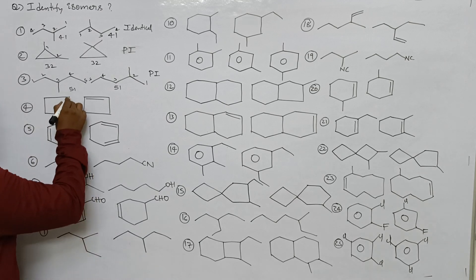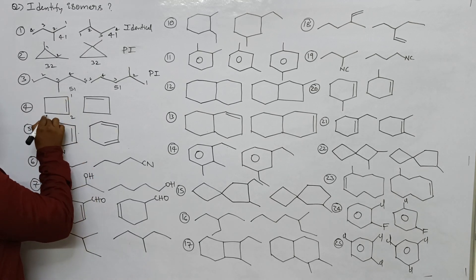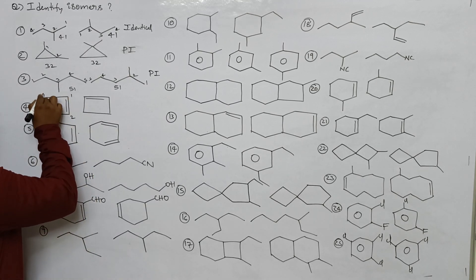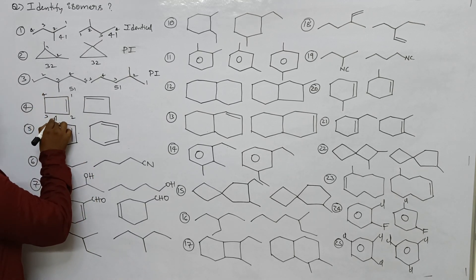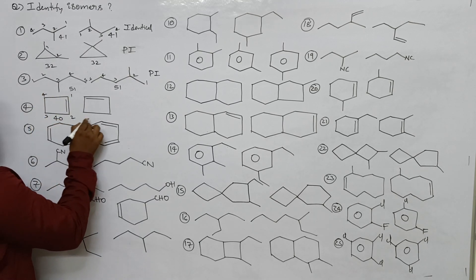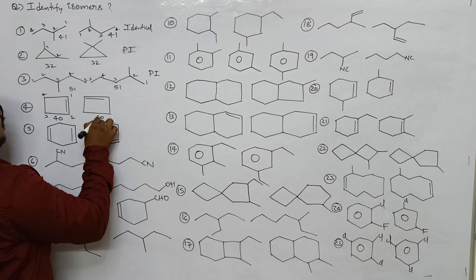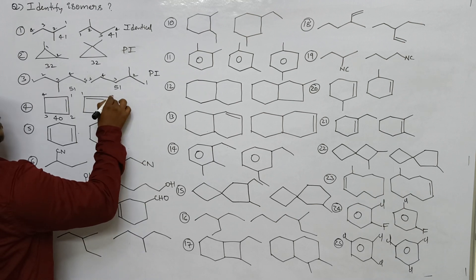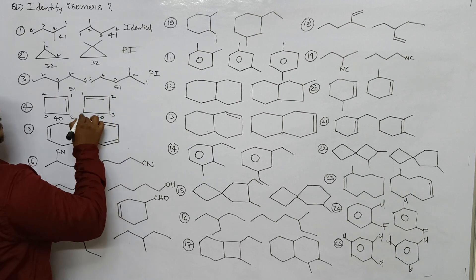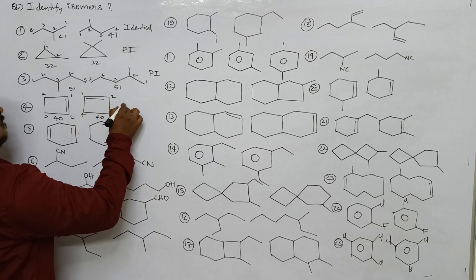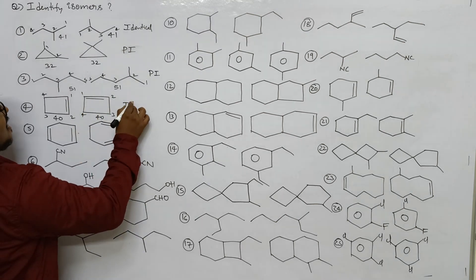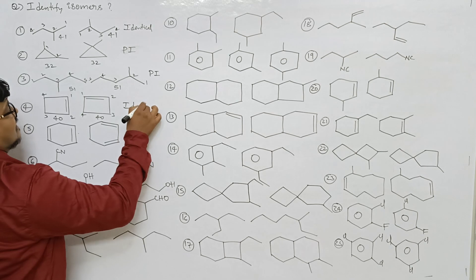Next one: one two three four — isomeric number 40. Here also 40. Double bond position also same. So these two are identical.